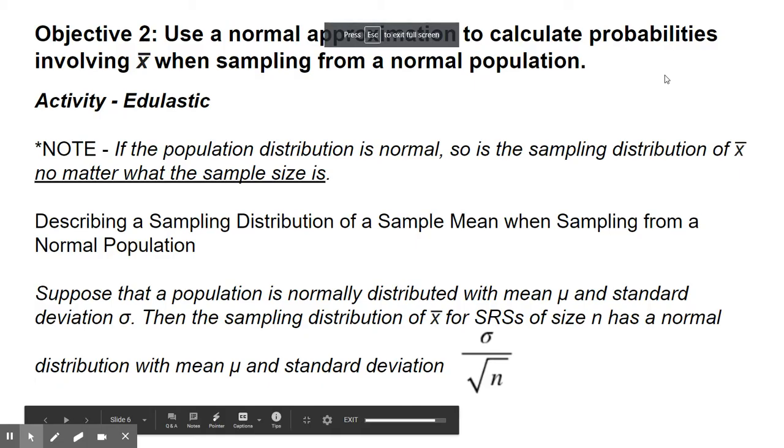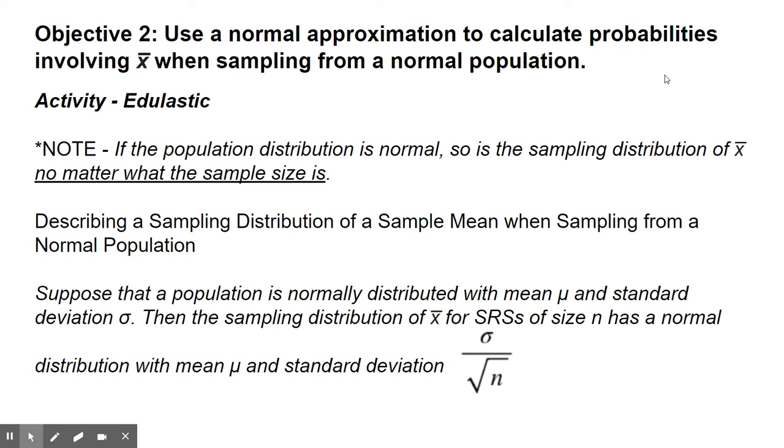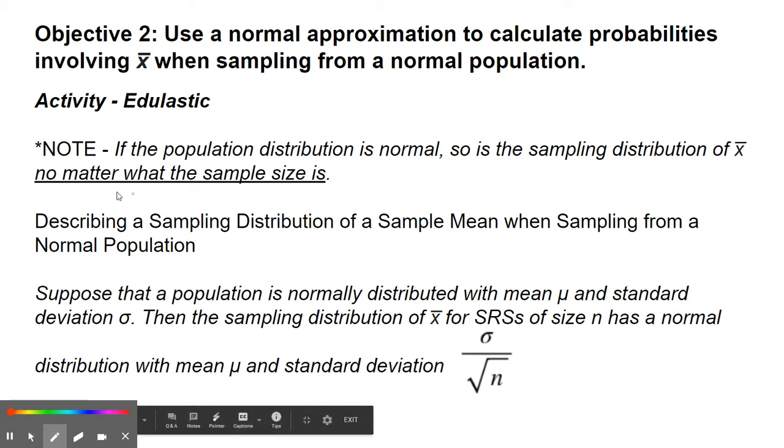Okay, objective two. Now we're going to look at finding probabilities using these sampling distributions of the sample mean x-bar. We have an activity on Edulastic, just like the last two sections, talking about the shape of the sampling distribution. Go ahead and pause this video, go do that activity, and then come back.